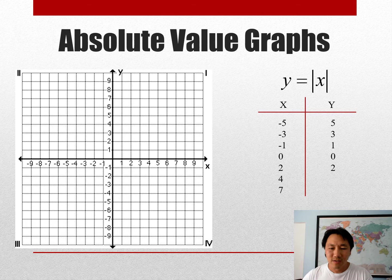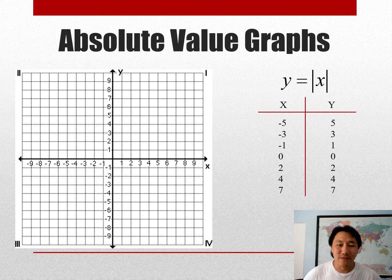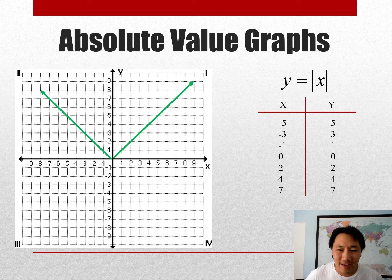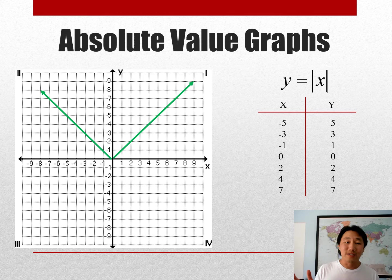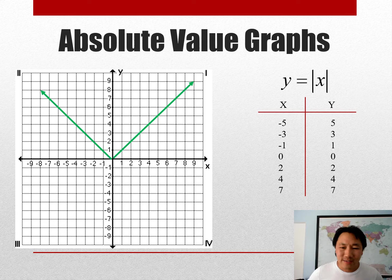Plug in a 2, you got 2, and then 4, and then 7. If you plot those points on the graph, this is what it looks like. All right, and that is going to be our parent graph for absolute value, so basically the original graph for absolute value.